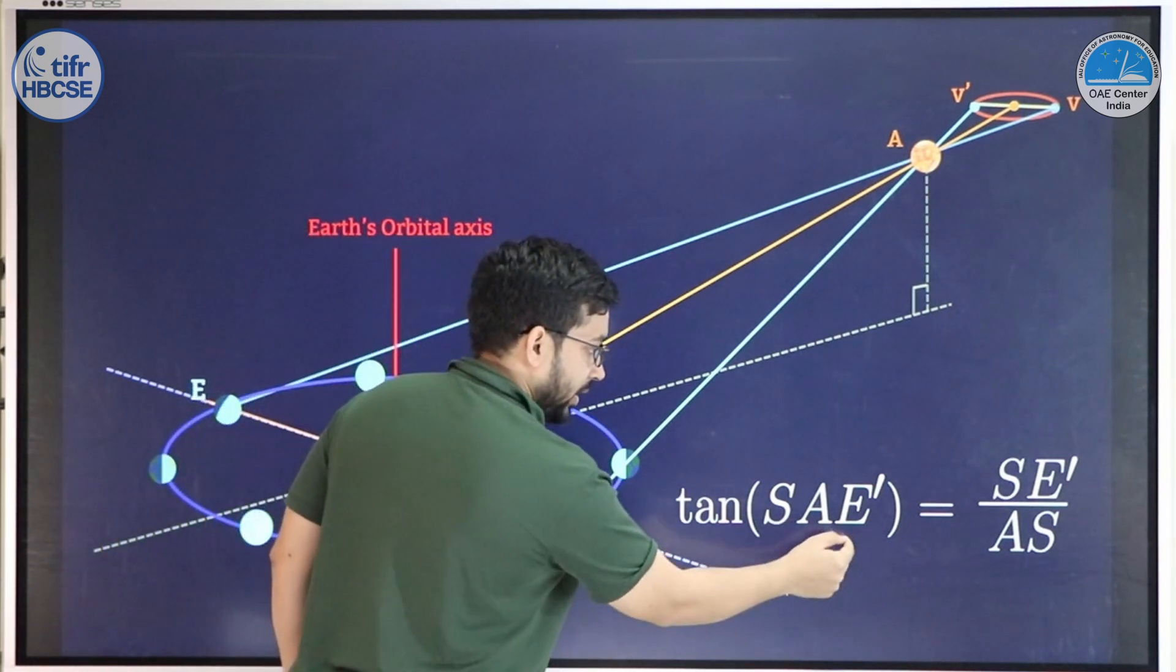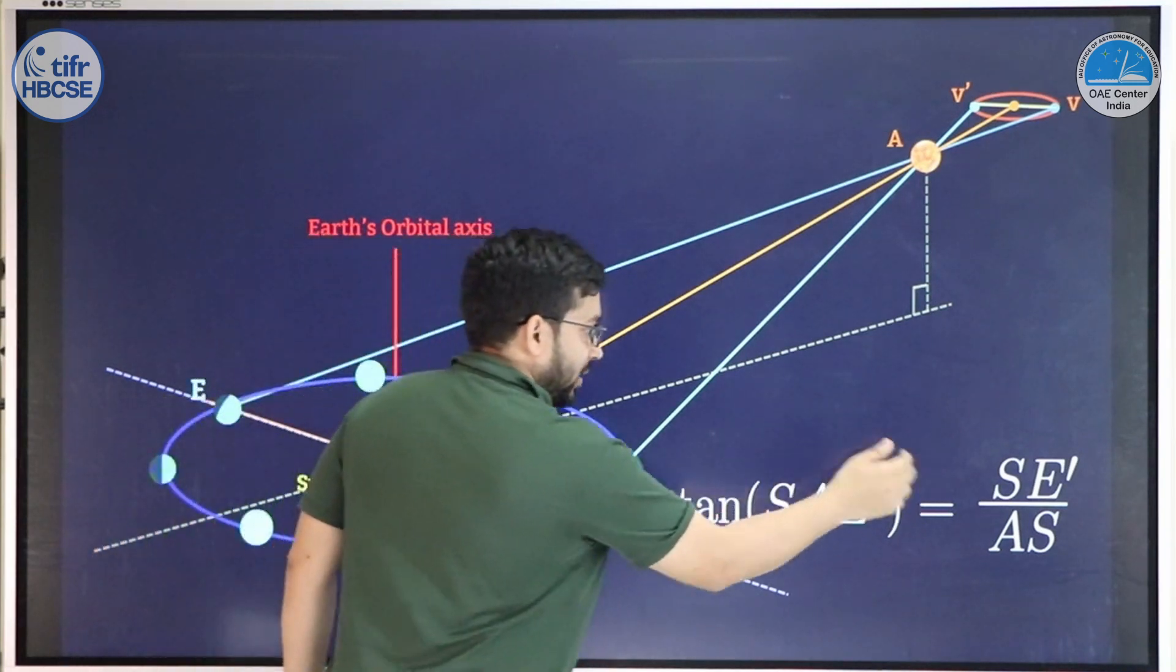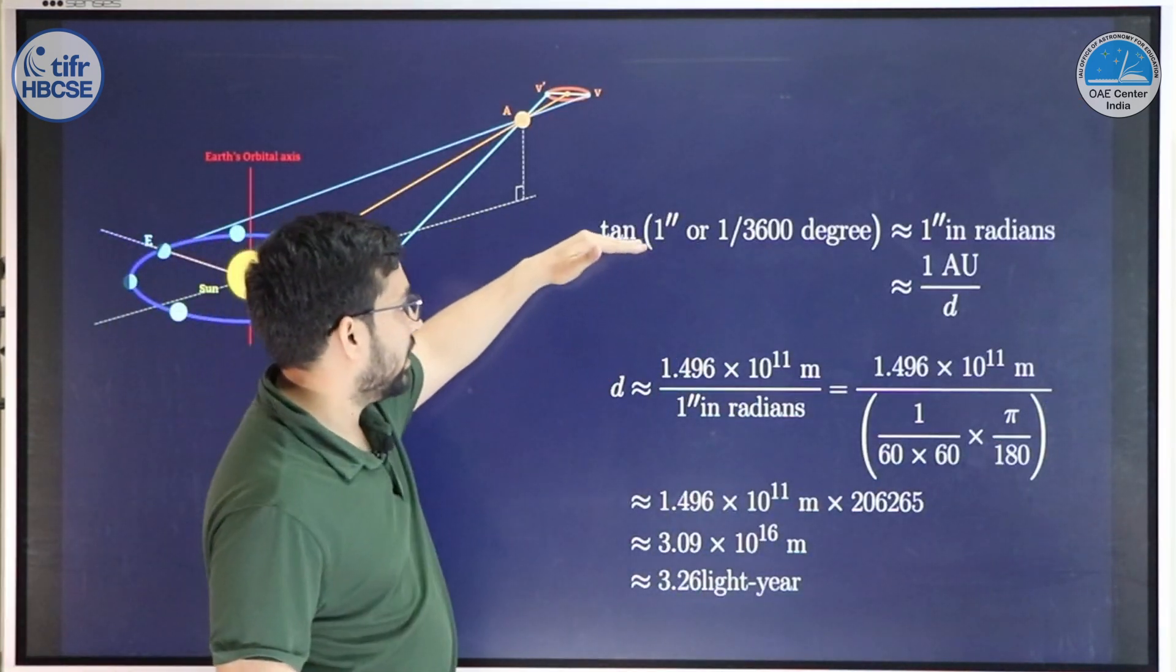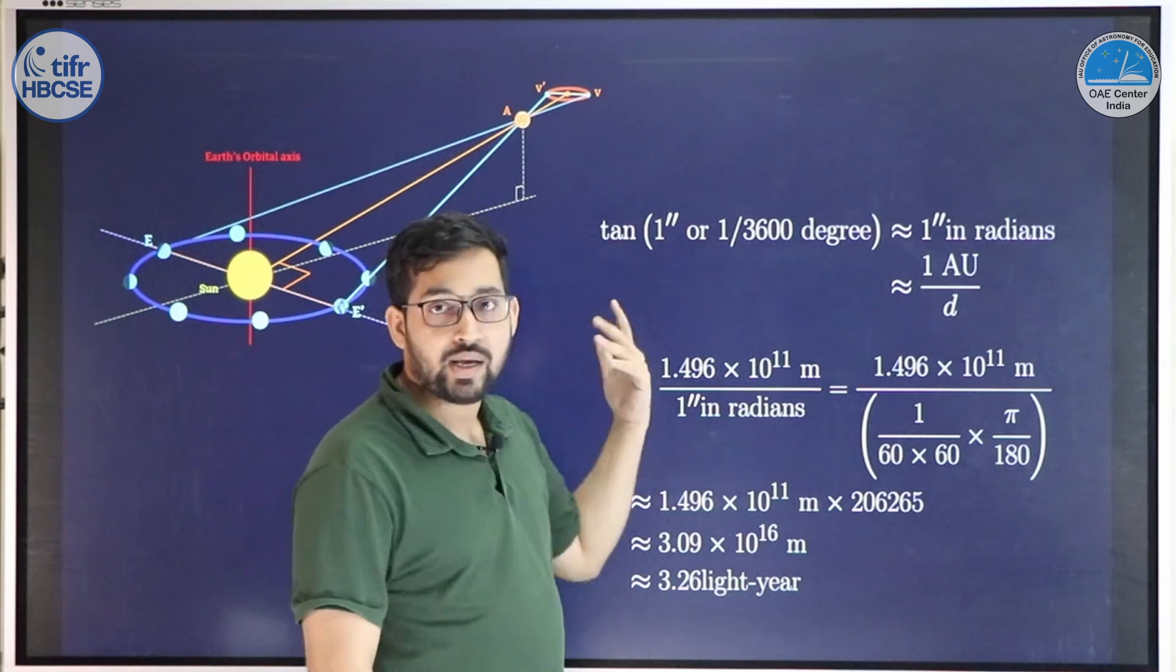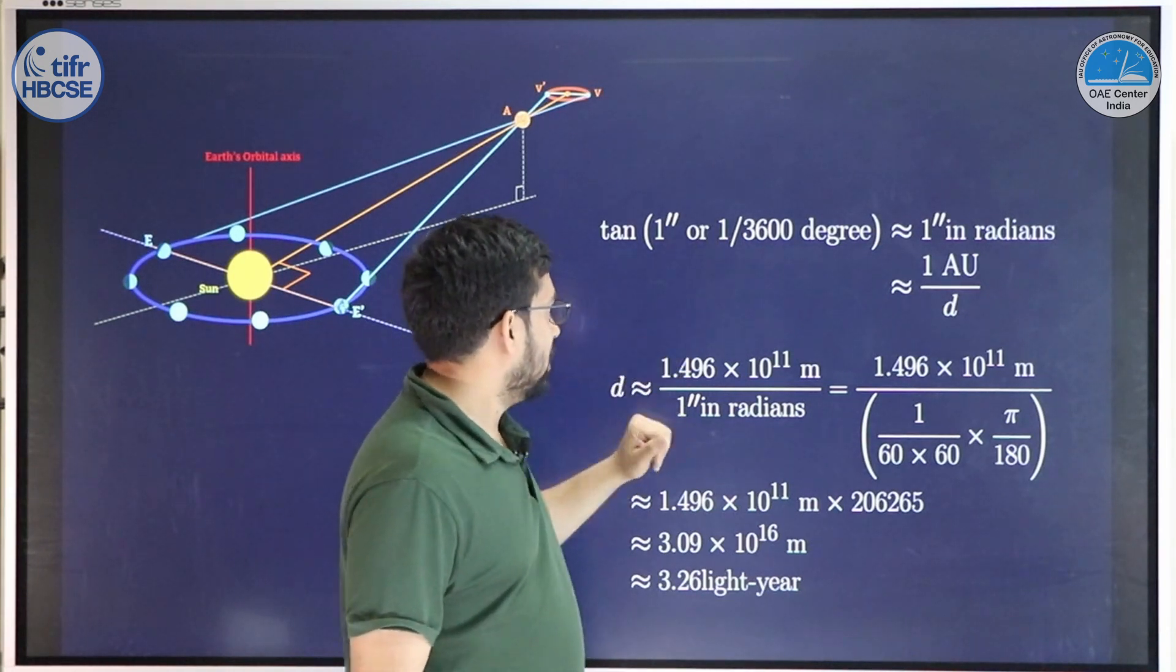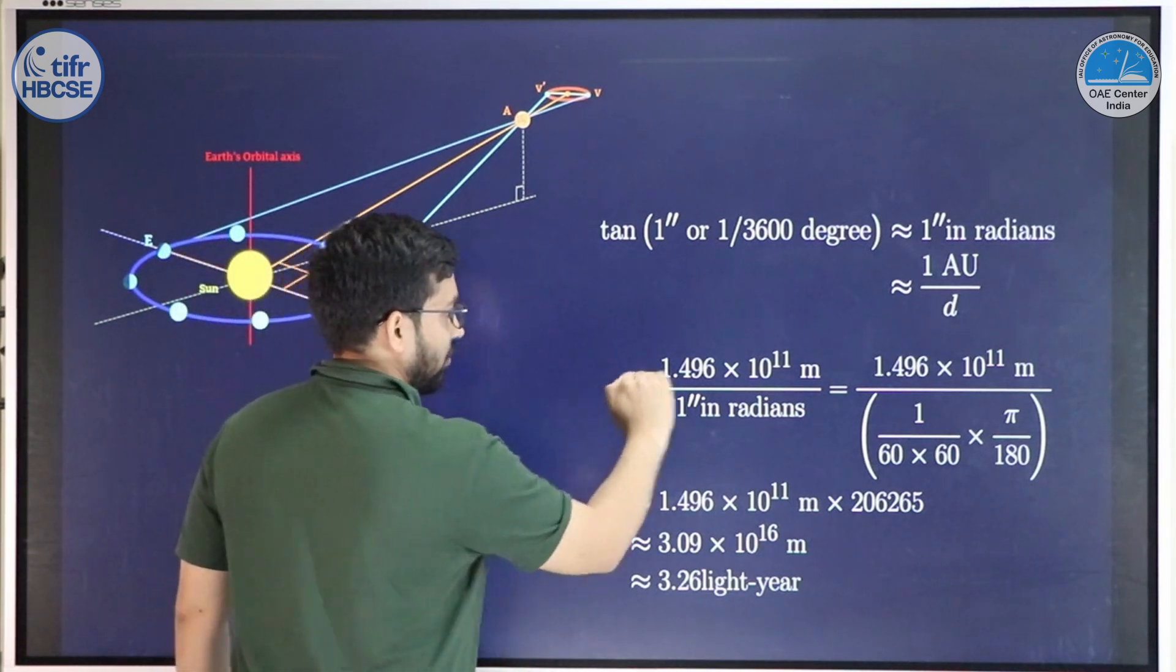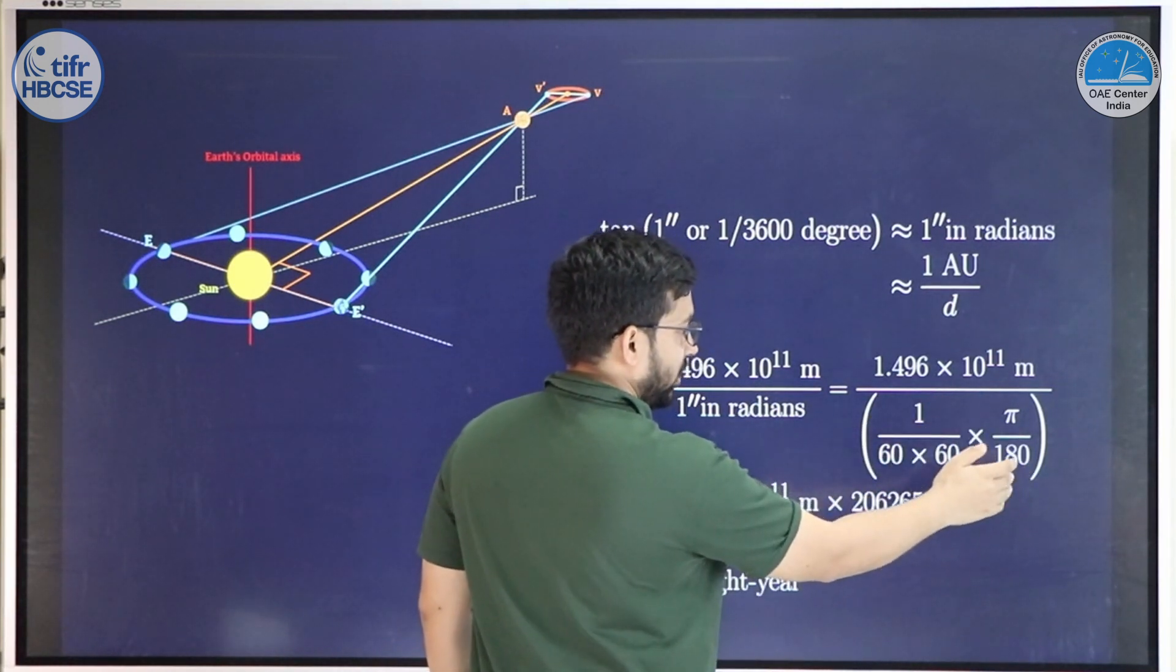So, tan of angle SAE' will be the distance between Sun and Earth, which is 1 AU, which we know, divided by the distance. Since these distances are quite large, we can use some approximation. We know tan x equals x when x is very small, but for that, x has to be in radians. So we consider: what happens if that angular shift is about 1 arc second? That is about 1/3600 degree. So tan of this quantity will be 1 arc second, but in radians. This we know approximately is 1 AU divided by the distance to the star. Rearranging this equation, we get distance as 1 AU divided by 1 arc second in radians. So this much degree times conversion from degree to radians, we get this quantity.